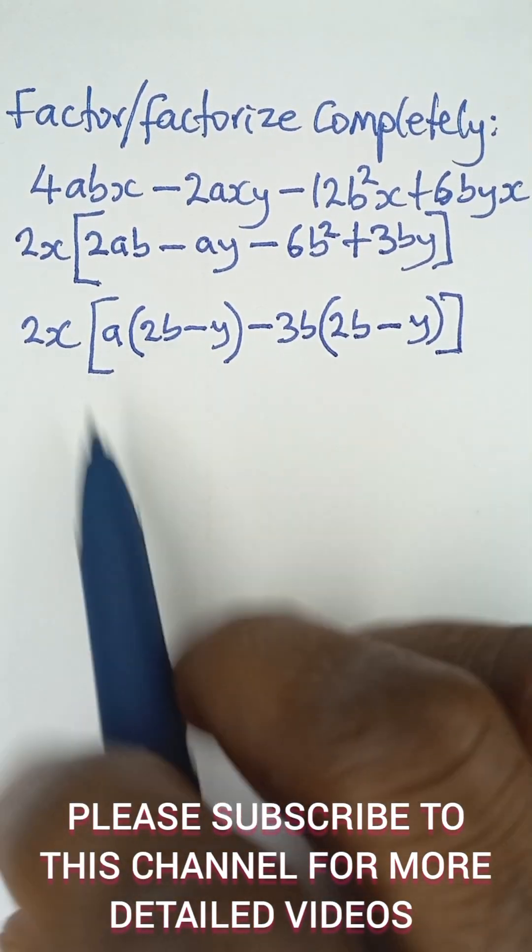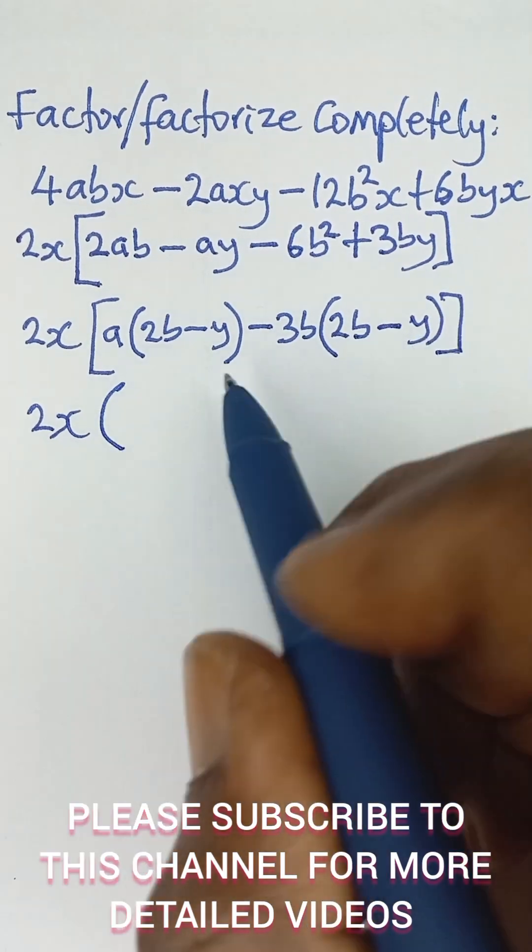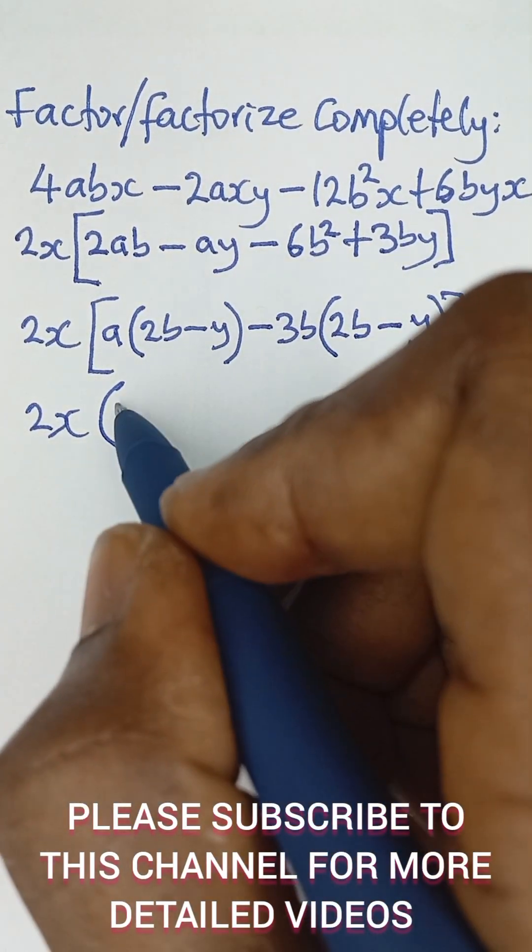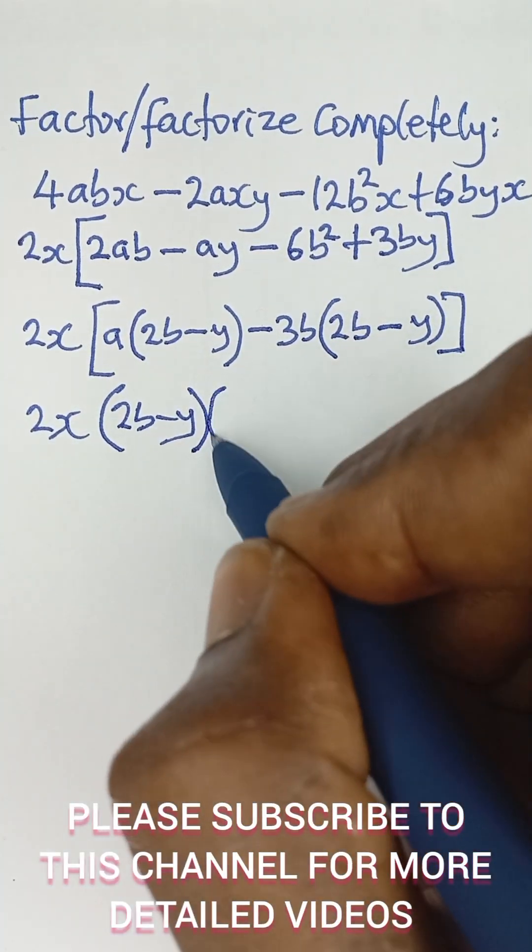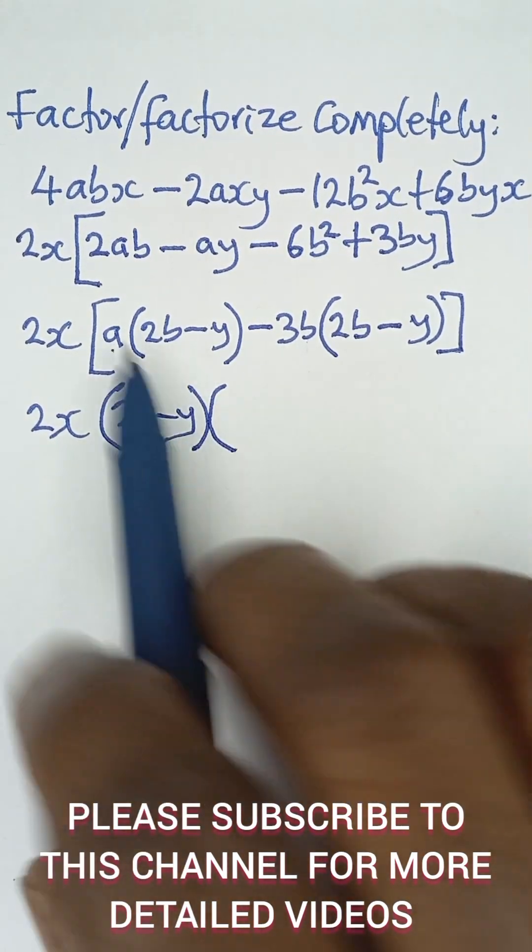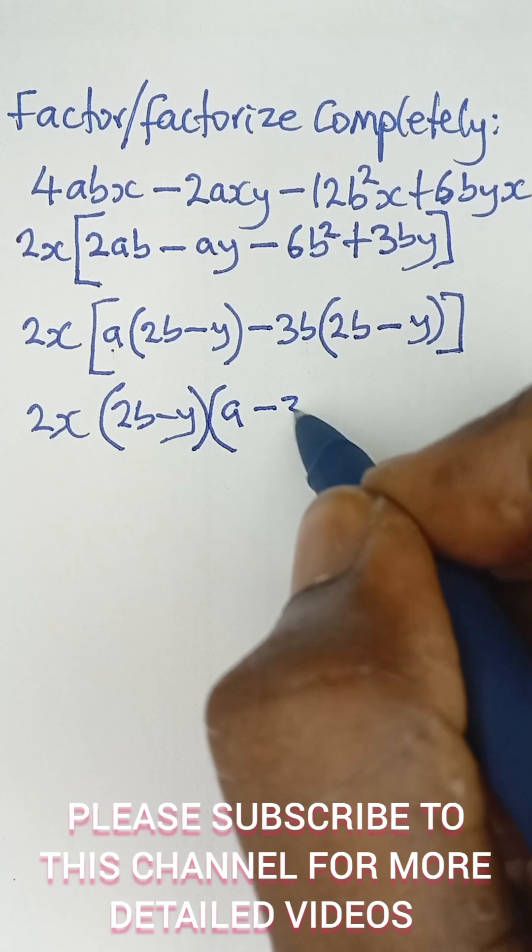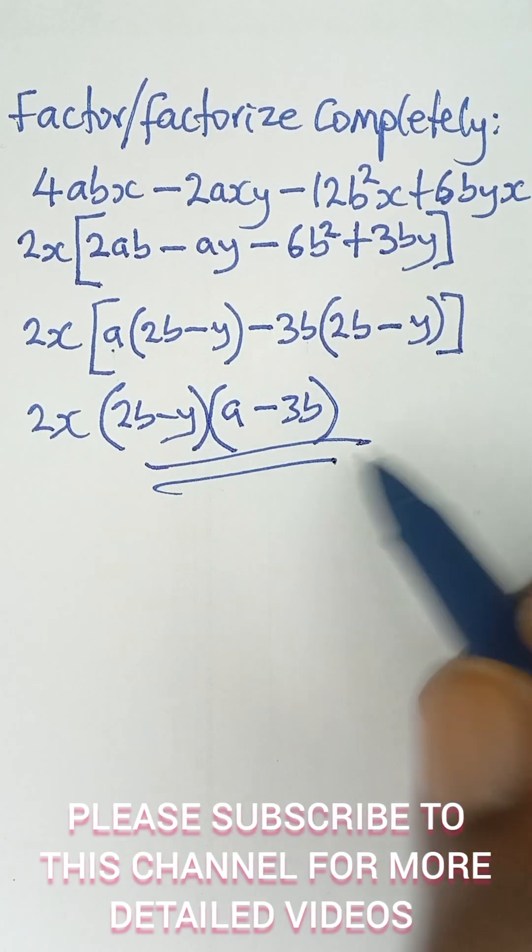Now, the next thing I need to look at is to bring out the 2x and then open up brackets. These two terms in the brackets, they are the same, so I simply pick one, 2b minus y. And then I close in brackets. I open up another bracket. I take these terms that are outside the brackets, so a minus 3b. And that gives me the final answer.